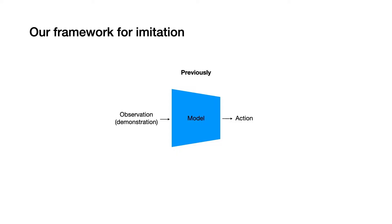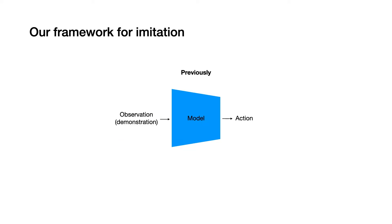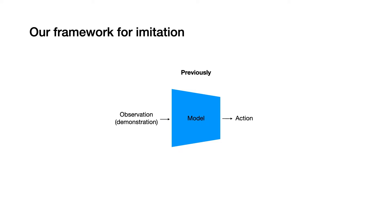Our work differs from previous approaches in learning from visual demonstrations in a fundamental way. Previous approaches like behavioral cloning try to learn how to take in an observation like this image and predict a robot action like a translation vector. These models were trained end-to-end with a supervised training loss, meaning they conflated two related problems: learning a good representation of the visual observation and learning a behavioral policy on those observations.